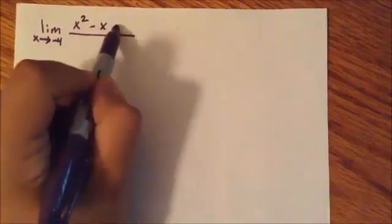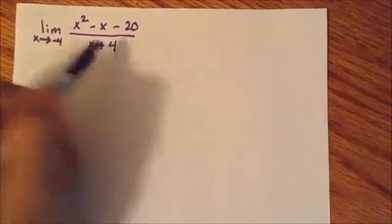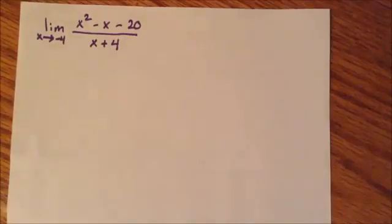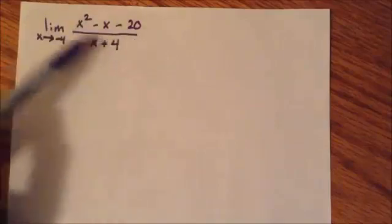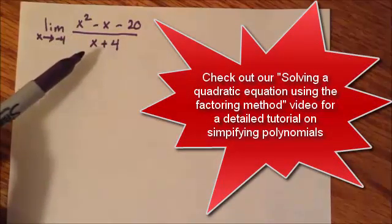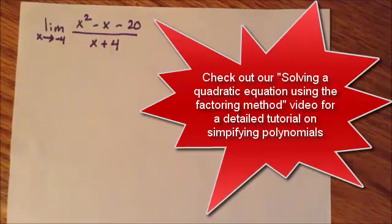So let's get to our first common mistake. We have the limit as x approaches negative 4 of x squared minus x minus 20, over x plus 4. A lot of students try to plug in negative 4 for the denominator, get 0, say the limit does not exist, and get the wrong answer.